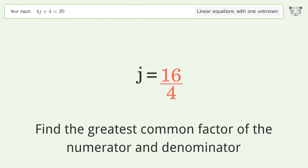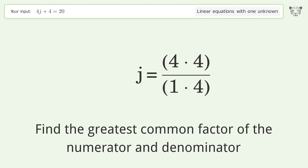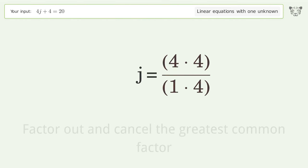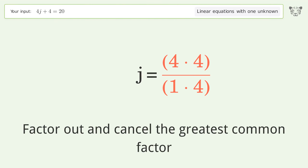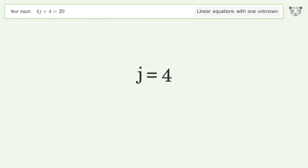Find the greatest common factor of the numerator and denominator. Factor out and cancel the greatest common factor. And so the final result is j equals 4.